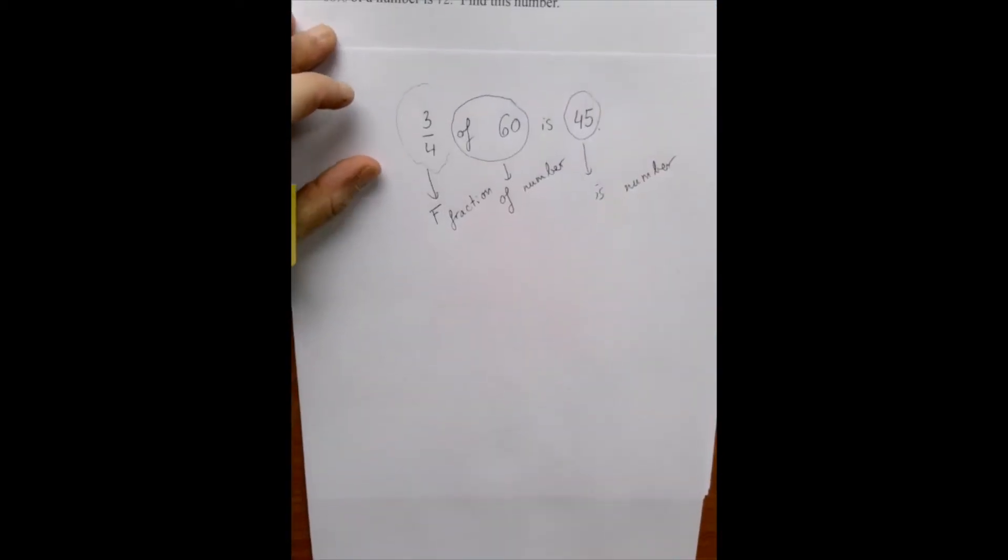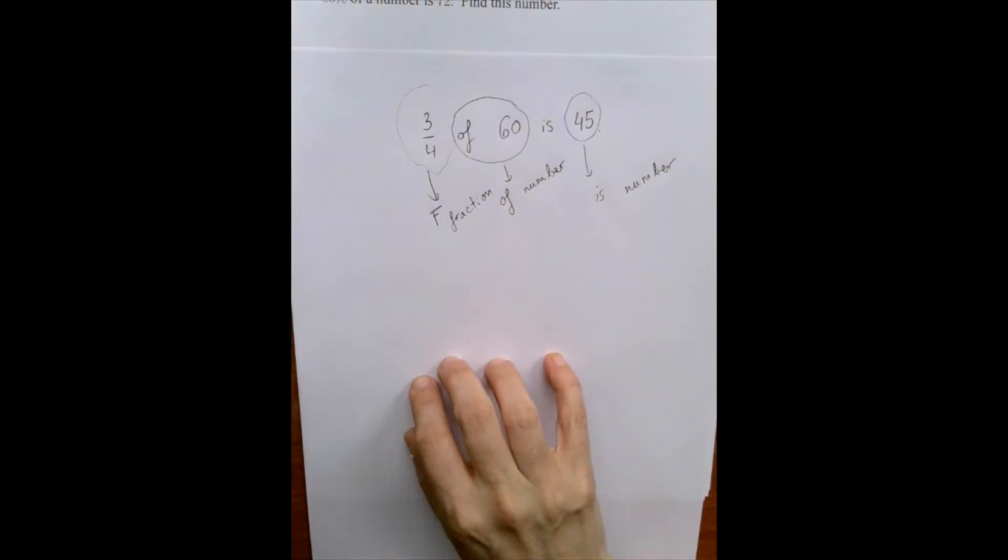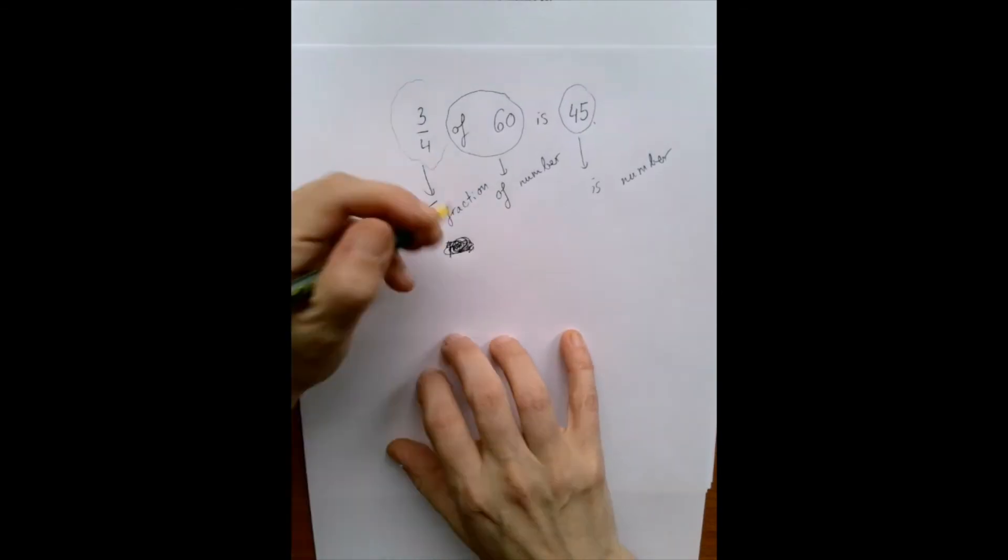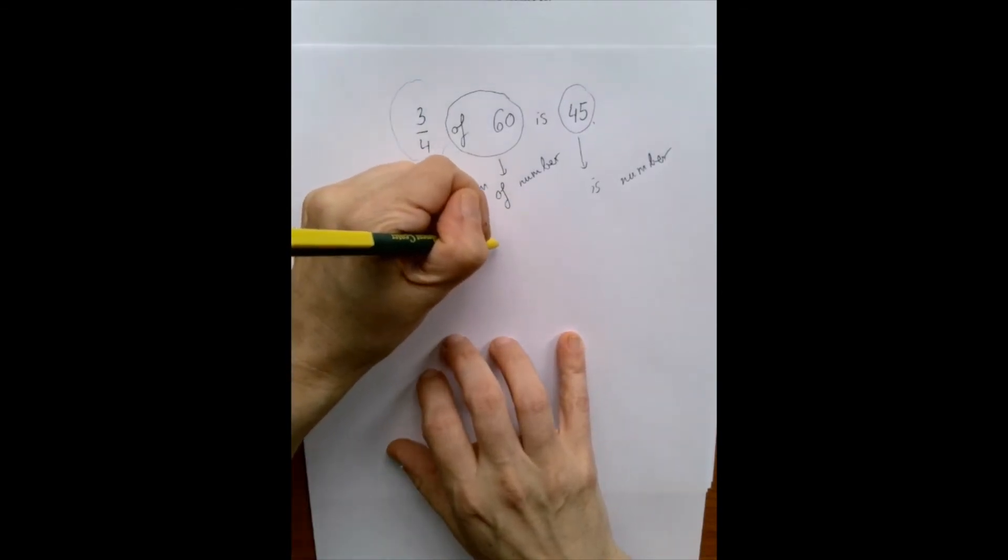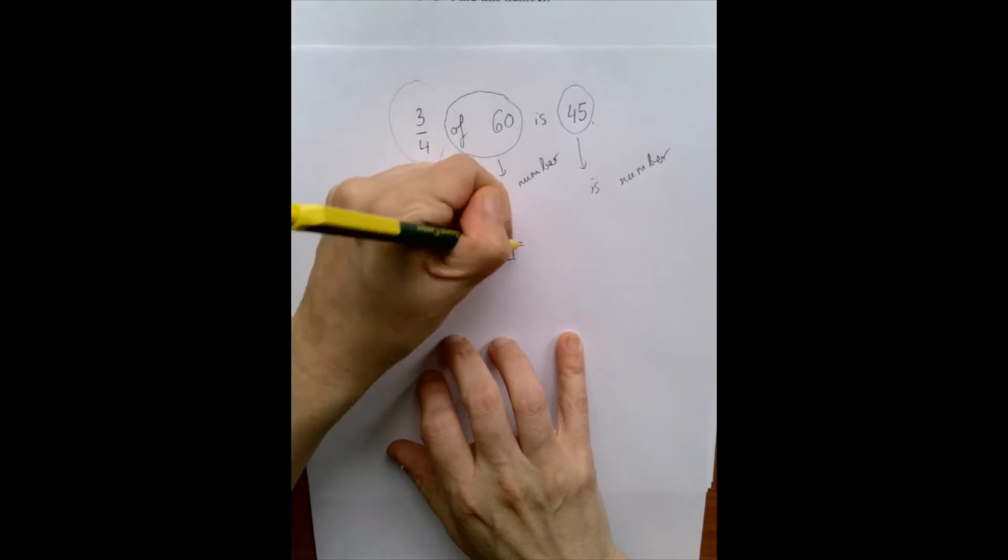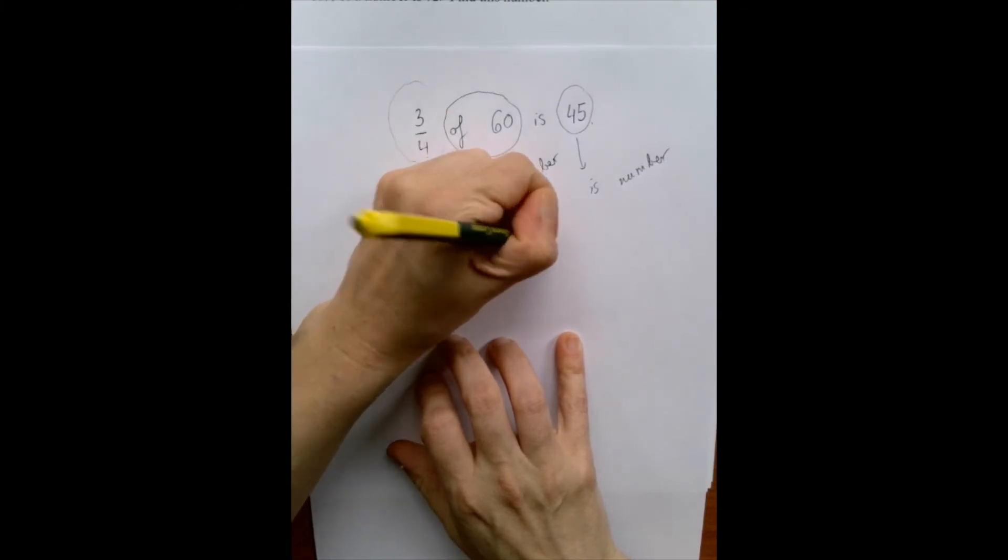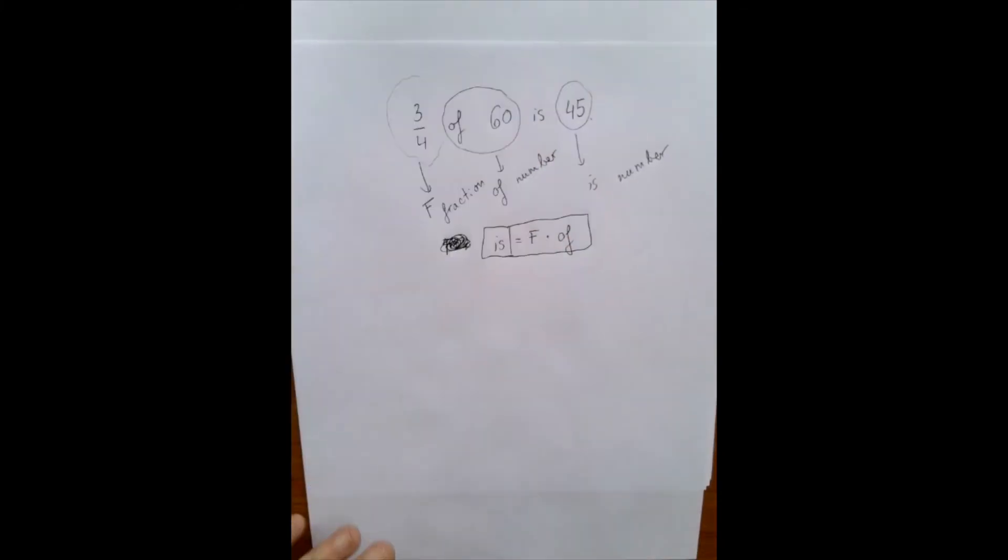So it doesn't matter what type of problem we're looking at. The formula is: is equals fraction times of. And it doesn't matter which type of question we have. We can always use this formula. We just have to identify which number is which.